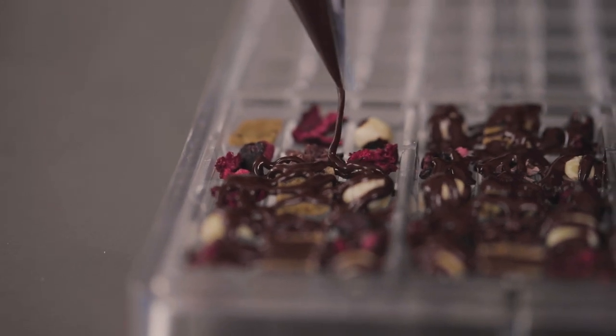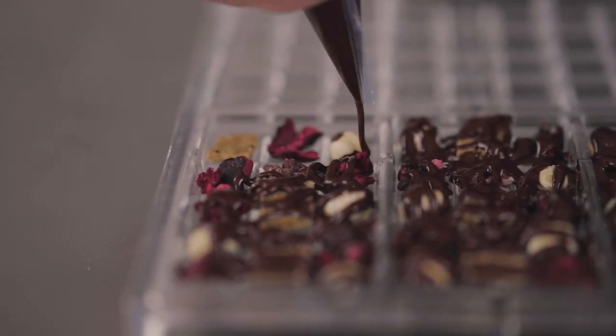Once you're happy with that, you can either leave it at room temperature, if your room temperature is not over 20 degrees Celsius, or you can pop it in the refrigerator for about two to three minutes. And then when you take it out, don't add the chocolate until your mold has come more to room temperature. So maybe leave it out for about five minutes before pouring your chocolate in.